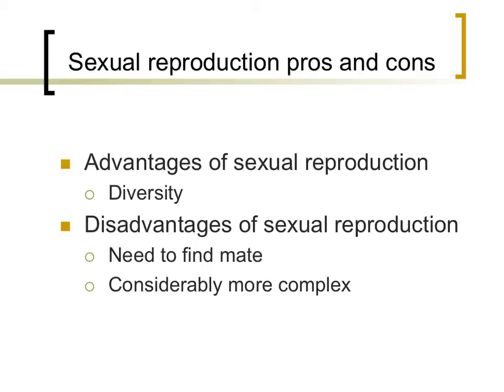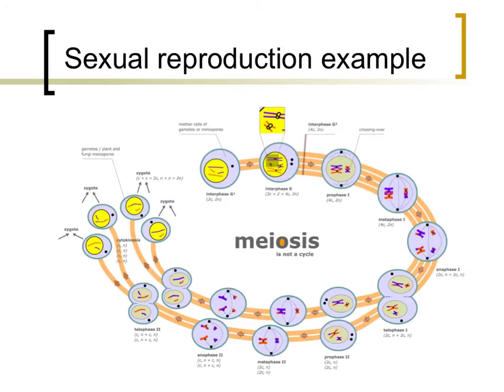Ignoring identical twins, each of the offspring that are produced should also be different from one another. While there are advantages to sexual reproduction, there are also some disadvantages. First, organisms require a mate to produce new offspring, and second, the process itself is much more complicated. In humans, sexual reproduction occurs through a process called meiosis. This process, as you might immediately notice, is quite complex. There is an entire video devoted to explaining the intricacies of this process.